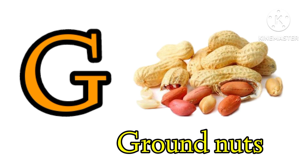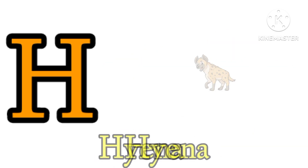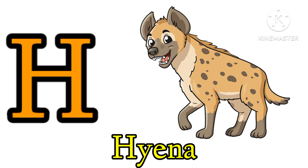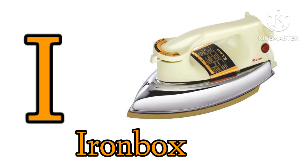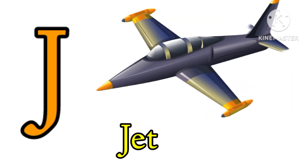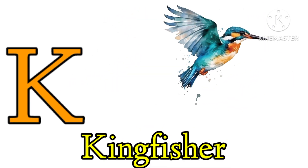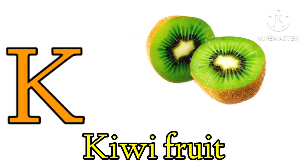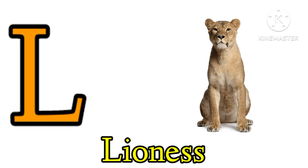H for Hammerhead, H for Hyena. I for Iguana, I for Iron Box. J for Jaguar, J for Jet. K for Kingfisher, K for Kiwi Fruit.